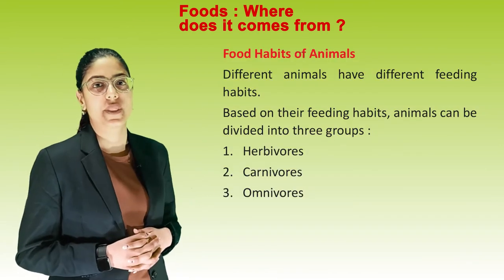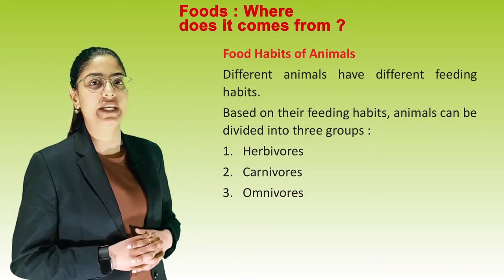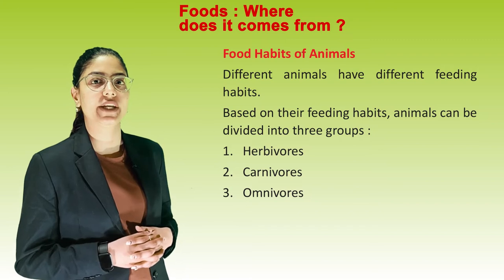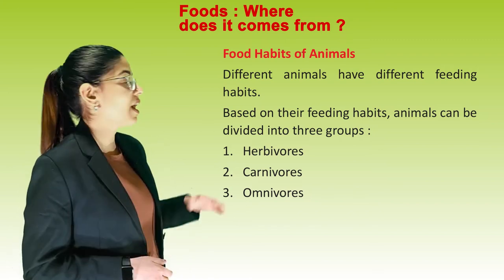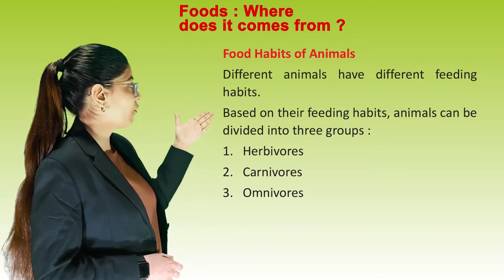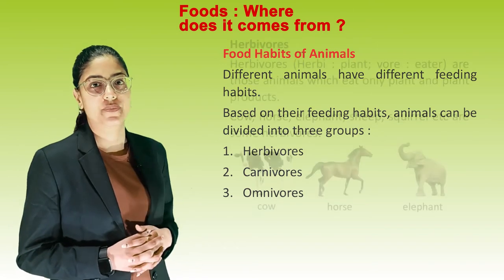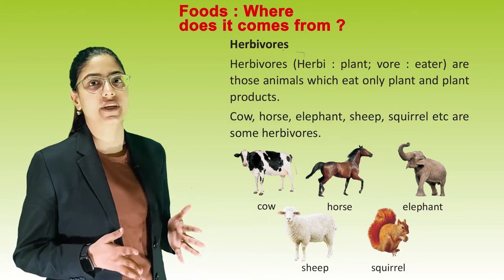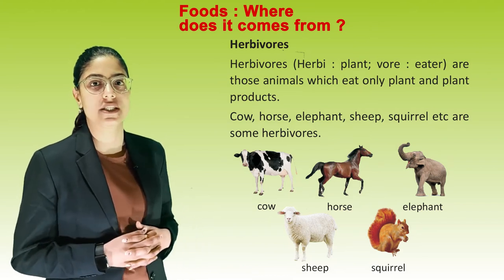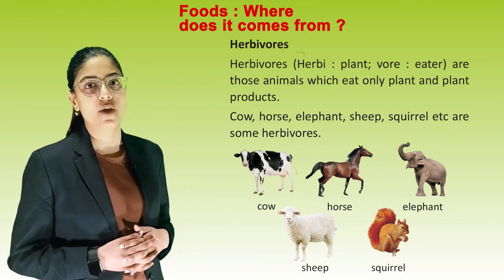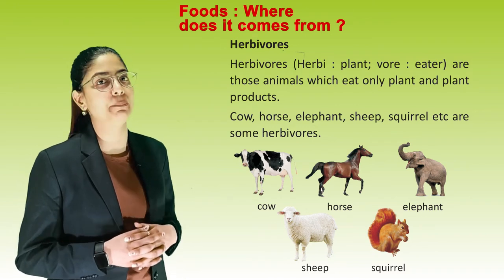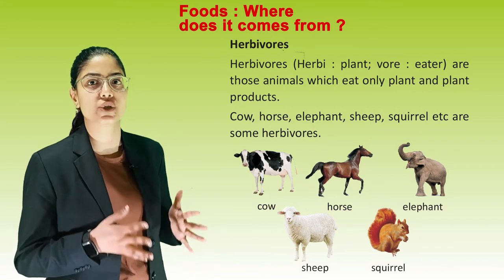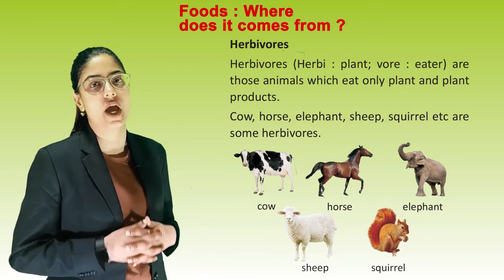Food habits of animals. Different animals have different feeding habits. Based on their feeding habits, animals can be divided into three groups: herbivorous, carnivorous, and omnivorous. Herbivorous — 'herbi' means plant and 'vore' means eater. These are animals which eat only plants and plant products. Cow, horse, elephant, sheep, and squirrel are some herbivorous animals.